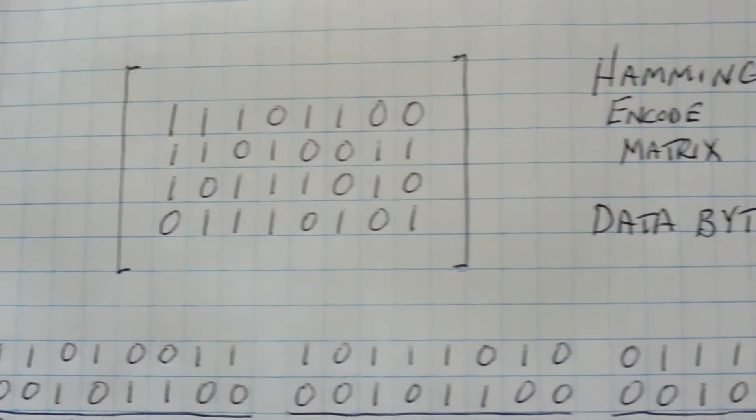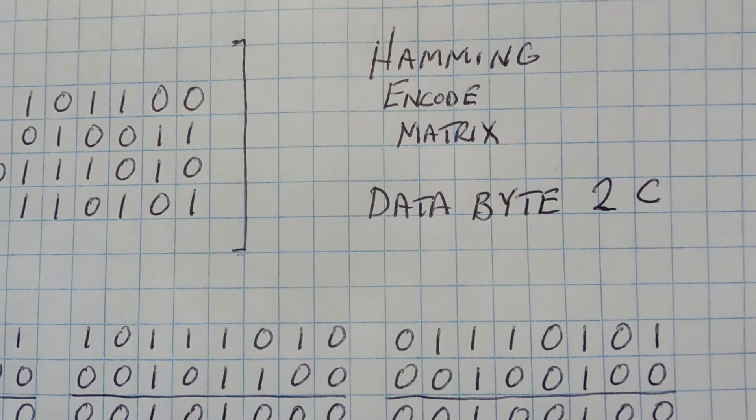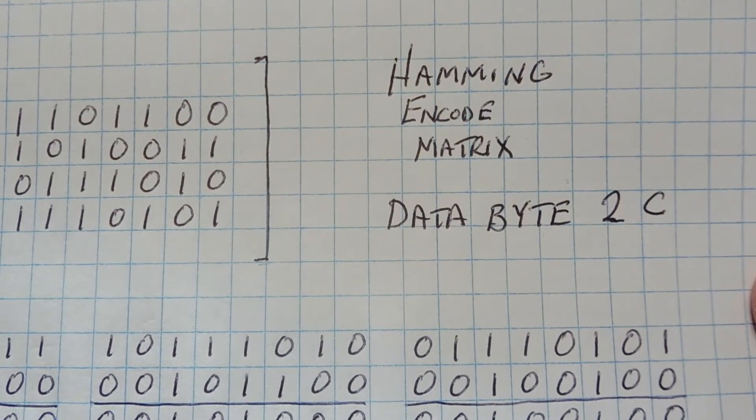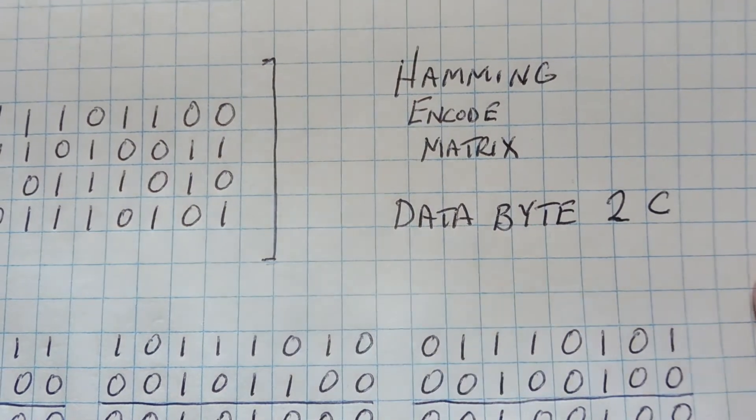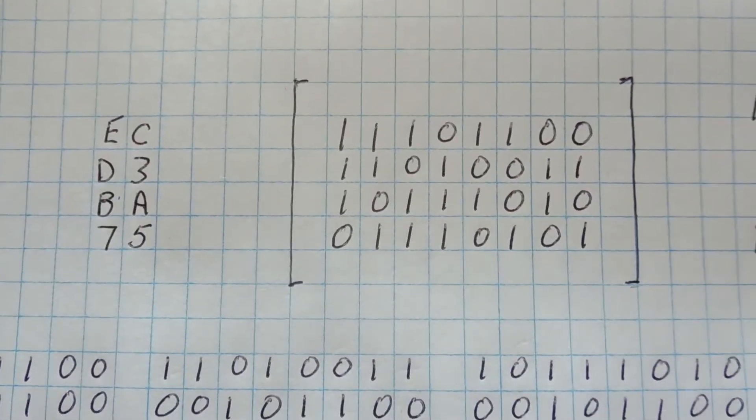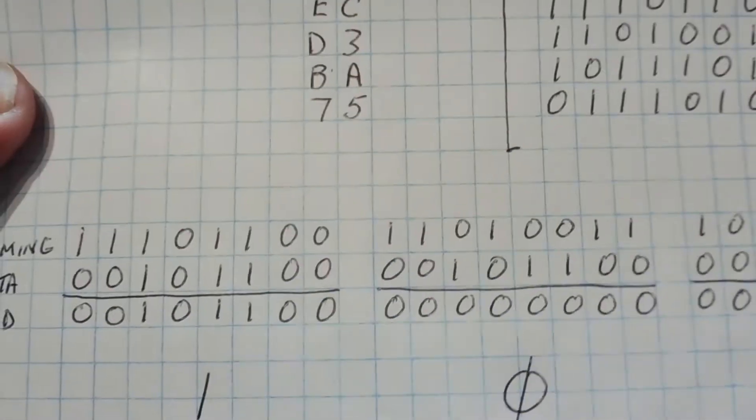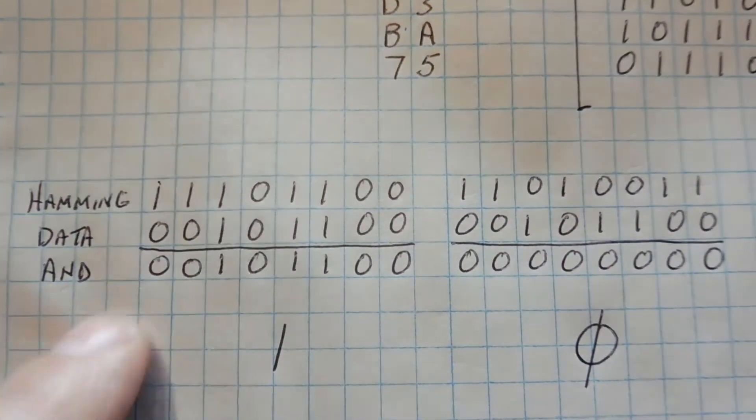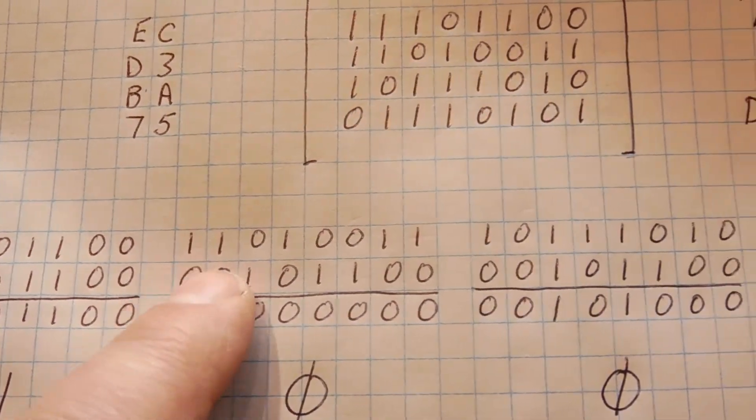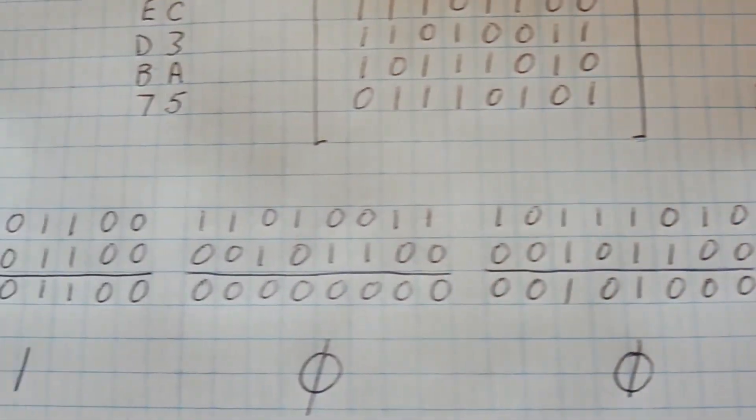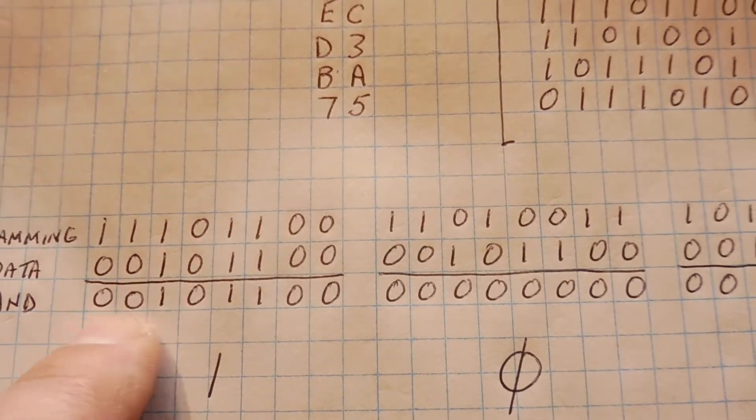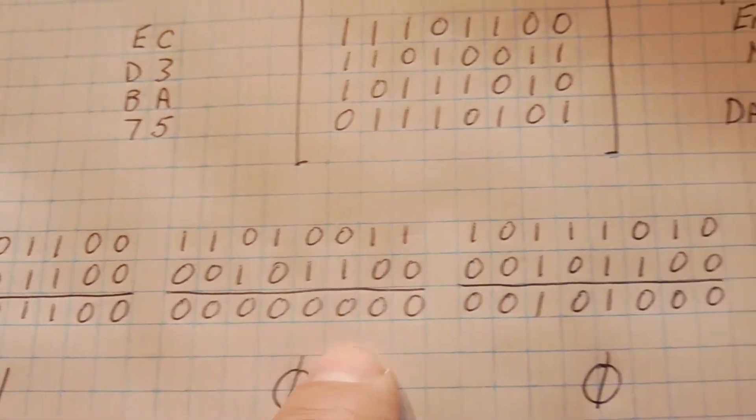Now the data byte that we want to encode is 2C. So we take that value 2C, and we do a logical AND to each one of the Hamming code bytes. So 2C, logical ANDed with EC, and then D3, then BA, then 7-5. So here's the calculation. So you see on the top line, we have our Hamming code. So we'll have EC, D3, BA, and 7-5. And we're going to AND it with 2C. So that's our second line. So there's our result. There's a result for our four calculations.